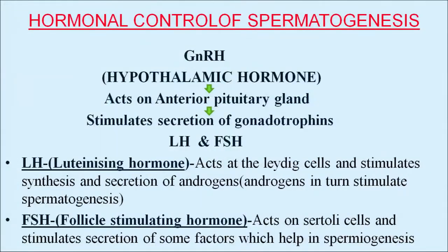The hormonal control of spermatogenesis starts with GnRH — gonadotropin-releasing hormone — a hypothalamic hormone secreted by the hypothalamus. It acts on the anterior pituitary and stimulates secretion of two gonadotropins: LH and FSH. LH — luteinizing hormone — acts on Leydig cells and stimulates secretion of androgens, which in turn stimulate spermatogenesis. FSH — follicle-stimulating hormone — acts on Sertoli cells and stimulates secretion of factors which help in spermiogenesis.